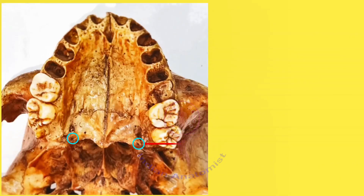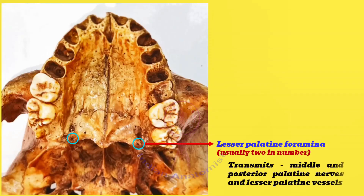The lesser palatine foramina are usually two to three in number, situated just behind the greater palatine foramen. They transmit the middle and posterior palatine nerves and the lesser palatine vessels.